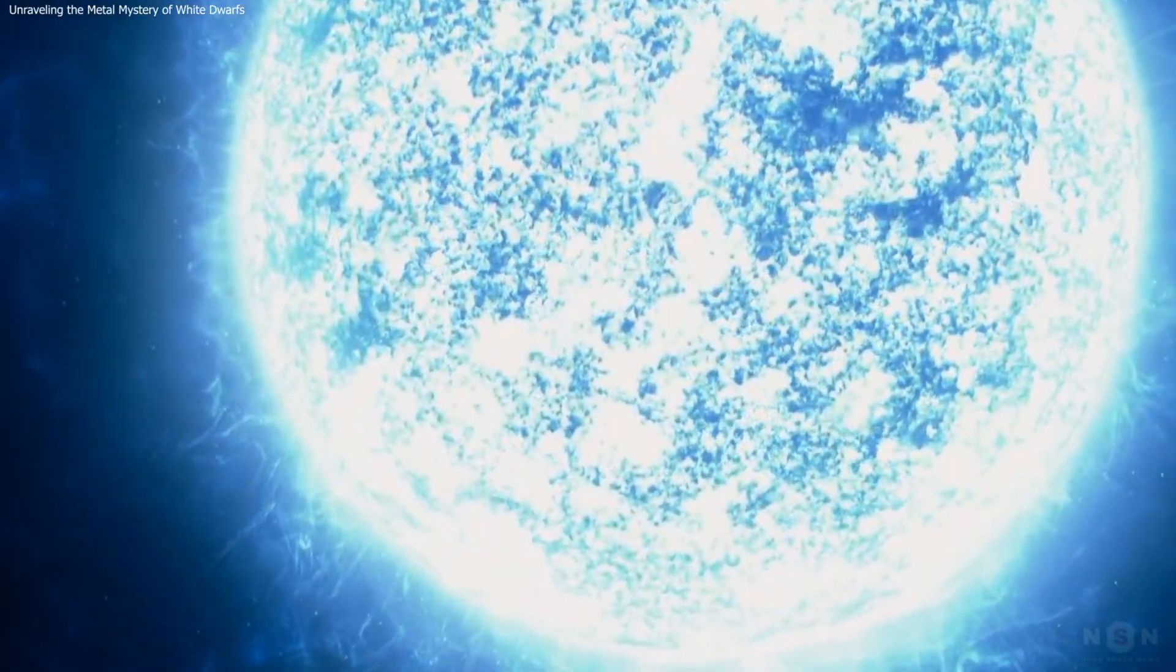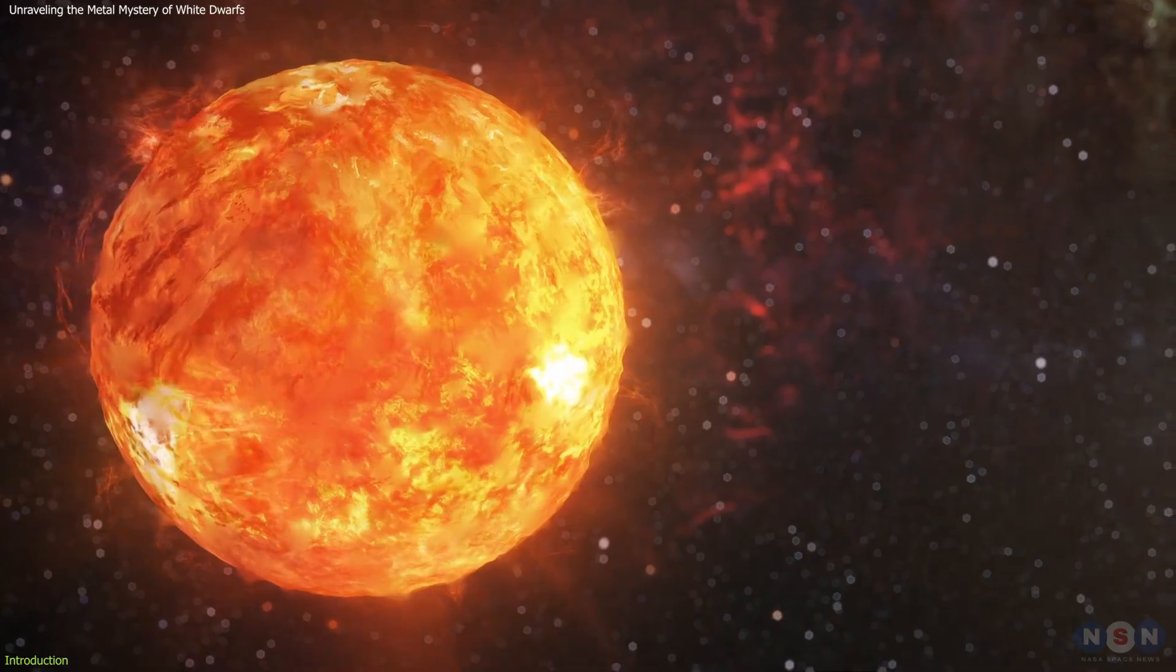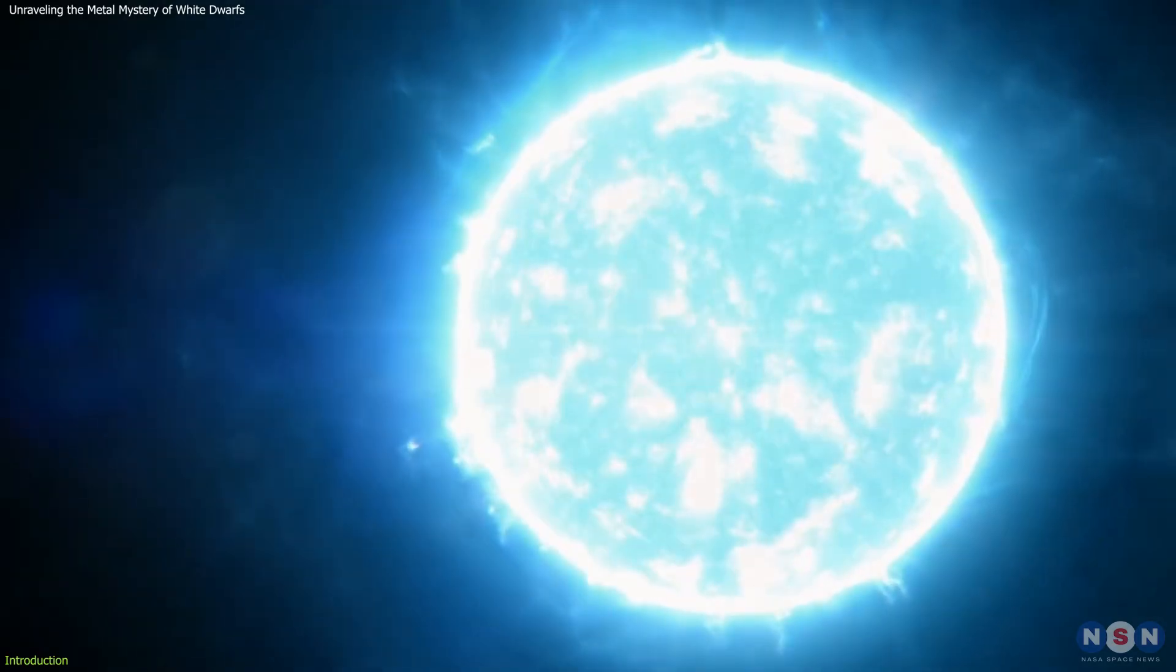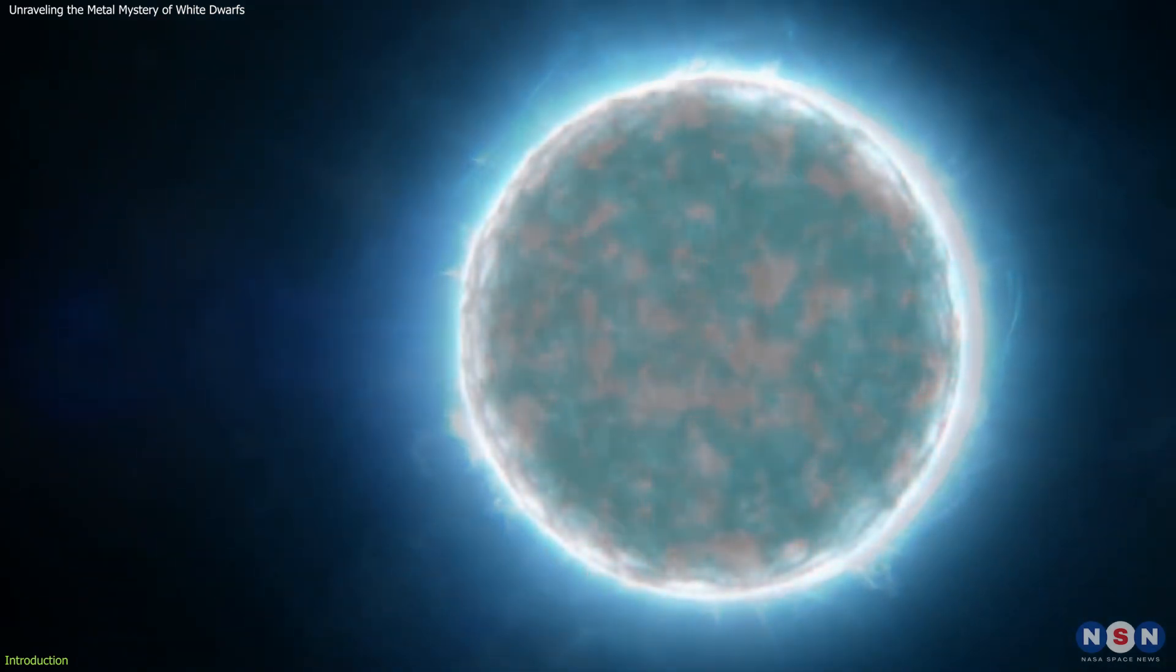Dead stars, known as white dwarfs, bear the mass of the Sun while being similar in size to Earth. These dense remnants form as stars deplete their nuclear fuel and their cores collapse under gravity.